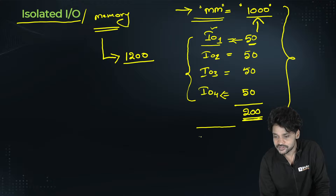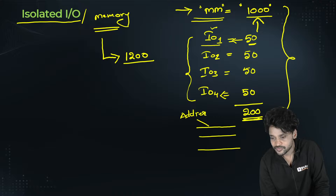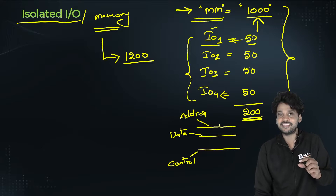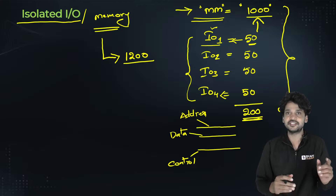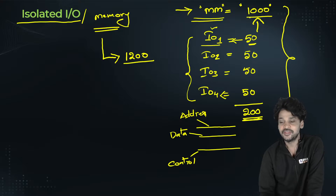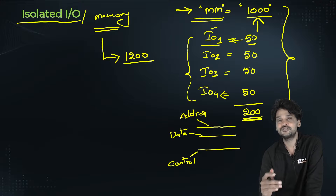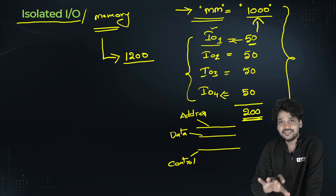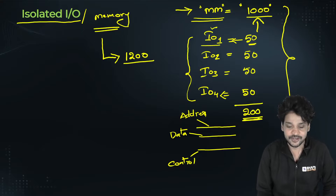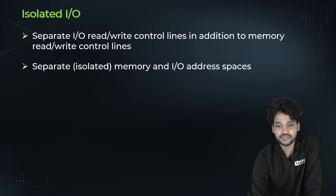Using the same address line, data line, and control line, the CPU differentiates between memory transfers and IO transfers purely by the address space. If the address is anywhere between 0 and 1000, the transfer is initiated to the memory; otherwise it goes to IO. In isolated IO, there are separate IO read and write control lines in addition to the memory read/write control lines, and separate memory and IO address spaces.